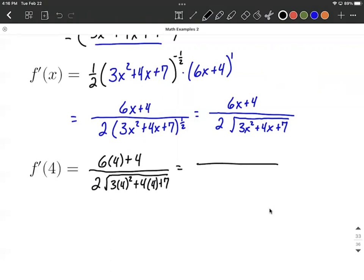Some further reducing we can do is work our order of operations. So 6 times 4 is going to be 24 plus 4. We still have the 2 down here, and then the square root of 3 times 16 plus 16 plus 7.